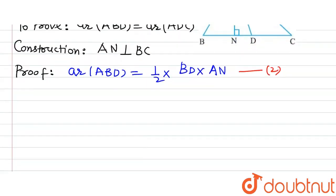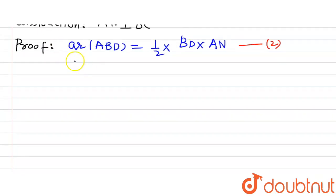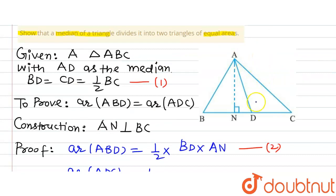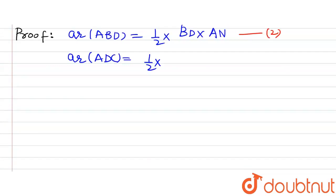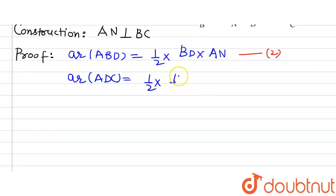Now we will find area ADC. Area ADC equals half times DC times AN. Let's name this equation 3.